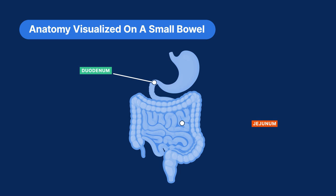The jejunum, which is the second part of the small intestine, is mainly responsible for absorbing nutrients such as carbohydrates and proteins. On a diagnostic image, the jejunum has a delicate, feathery appearance.